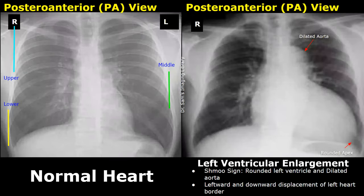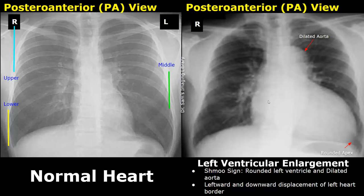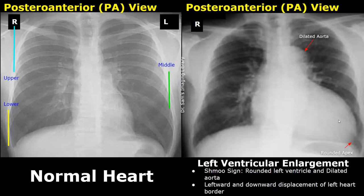Now we move on to left ventricular enlargement. Its features include the Schmoo sign, which refers to a rounded left ventricle and dilated aorta — the word 'Schmoo' is a comic book character which has a similar shape as seen on this X-ray. There is rounding of the apex, dilation of the aorta, and leftward and downward displacement of the left heart border.